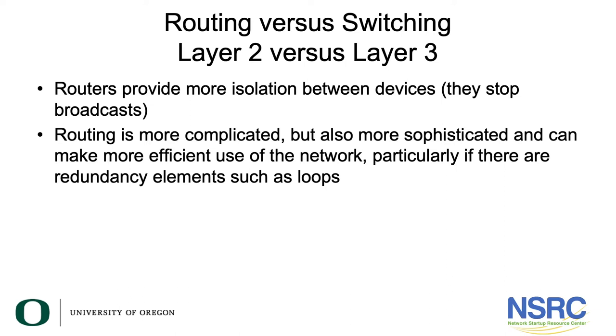Routing makes much more efficient use of the network, particularly if there are redundancy elements such as loops. As we think about layer two versus layer three — and we will look at this in a separate networking refresher section — if you're in a layer two network, consider what happens when you're on a Windows machine and you click 'add a printer' and say it's a network printer. Pretty soon a list of printers shows up. How does that work?